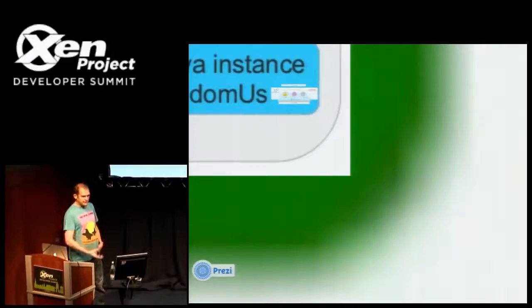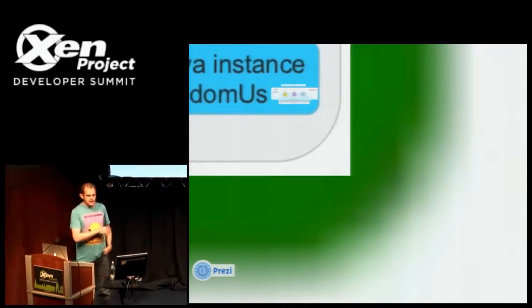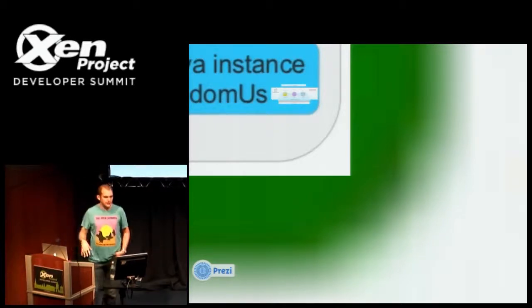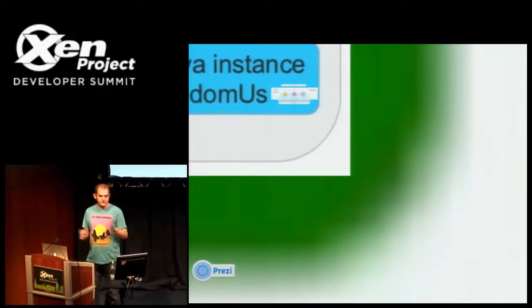When we test OpenStack, we actually test it by running instances, spinning up QEMU, talking libvirt, and those instances run on the HP and Rackspace Cloud. So in fact we have another version of OpenStack running the test cases — that was just to confuse everything, really.